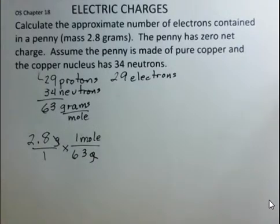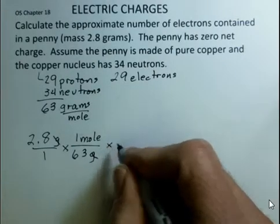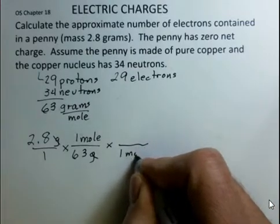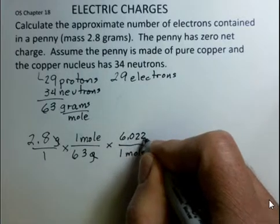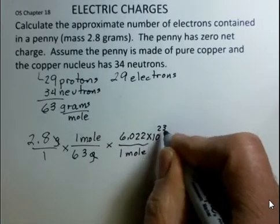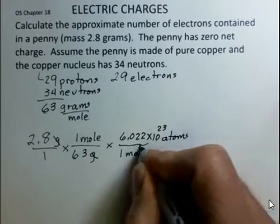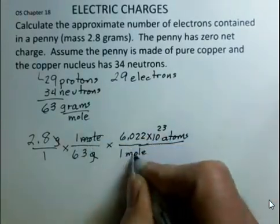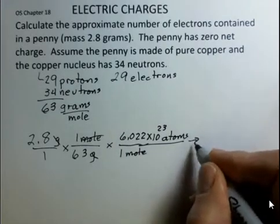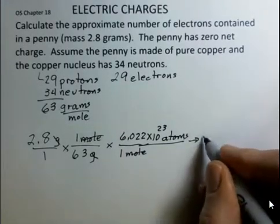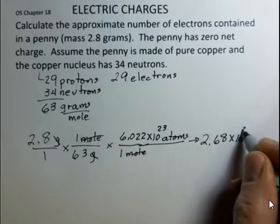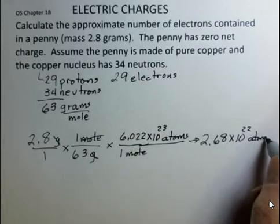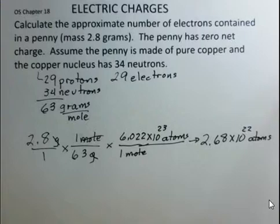And then we know how many atoms are in a mole using Avogadro's number. Avogadro's number tells us that in one mole of atoms, there will be 6.022 times 10 to the 23rd atoms. So the moles have cancelled, and now we can multiply this out and we'll have the number of atoms. And that rounded off is 2.68 times 10 to 22nd atoms.